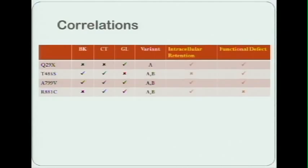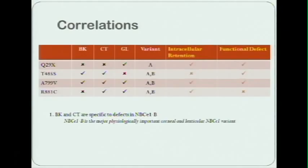Synthesizing all this information together - the phenotypes, the variant that it affects, and whether these are cellular retained in kidney or whether they have a functional defect or both - we can start to see patterns emerging. There are three interesting aspects in this study. Band keratopathy and cataracts are specific to mutations that only affect the B variant, which tells us that NBCe1B is the most physiologically important NBCe1 variant in the lens and the cornea.